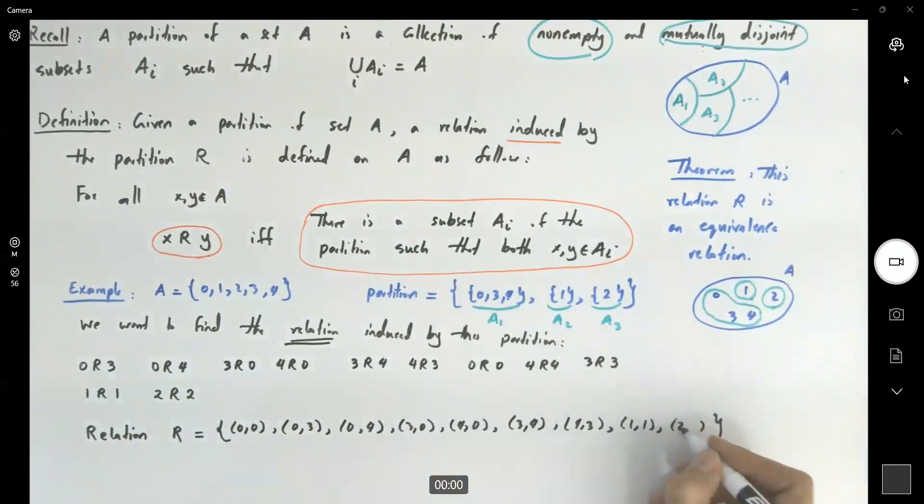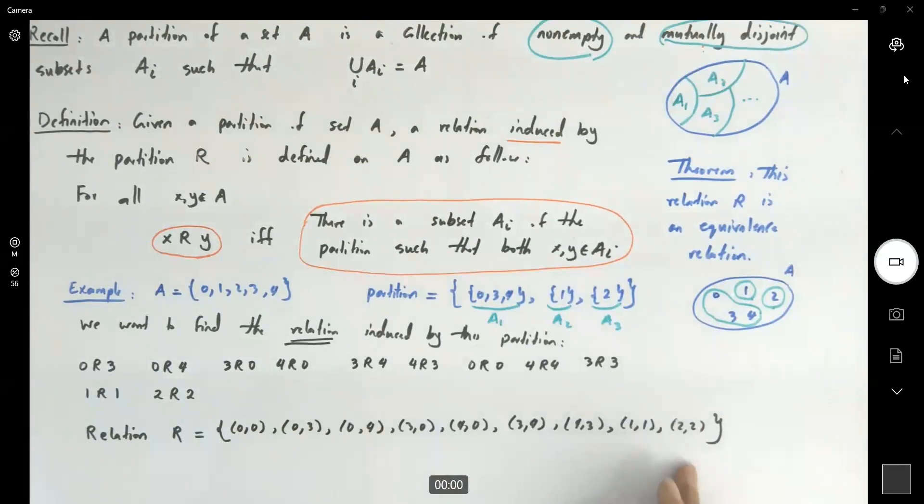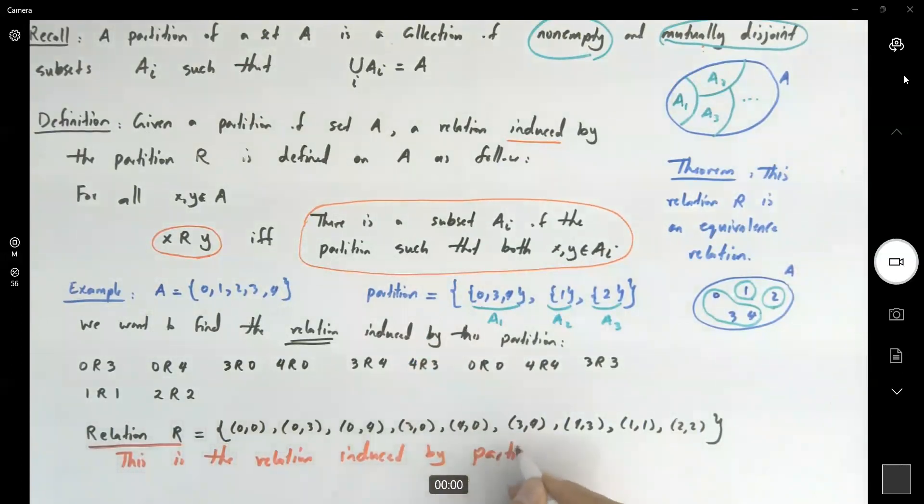So this is the relation induced by this partition. This is the relation induced by, generated by, partition given here: {0, 3, 4}, {1} and {2}. We defined a relation.